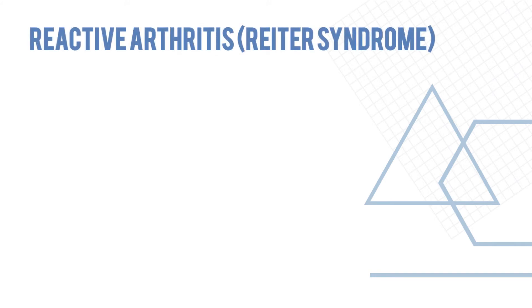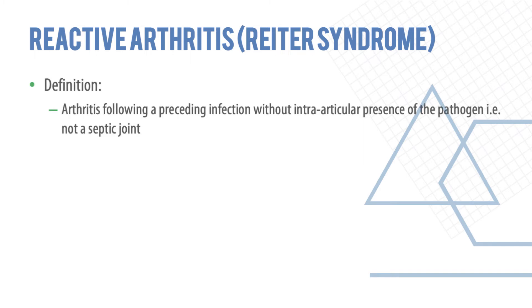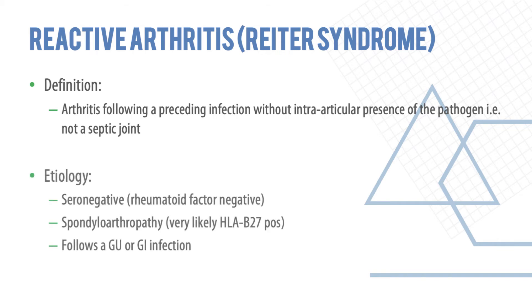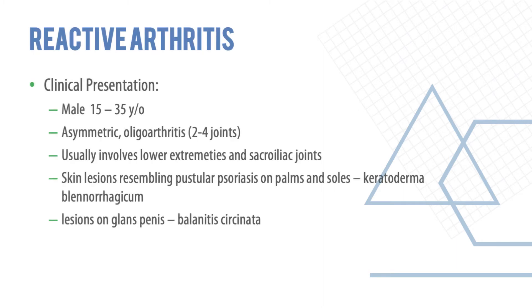Reactive arthritis, or Reiter's syndrome, is defined as arthritis following a preceding infection without intra-articular presence of the pathogen — it is not a septic joint. The etiology is a seronegative spondyloarthropathy, rheumatoid factor negative, and very likely HLA-B27 positive. It usually follows a GI infection and presents in a 15–35-year-old male with asymmetric oligoarthritis involving two to four joints, typically in the lower extremities and sacroiliac joints. Skin lesions resemble psoriasis on the palms and soles, and lesions on the glans penis known as balanitis circinata may also occur.